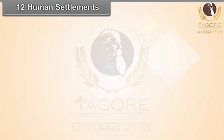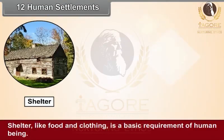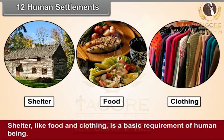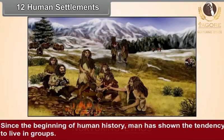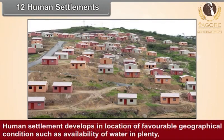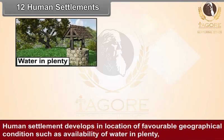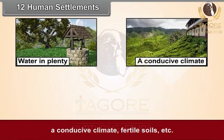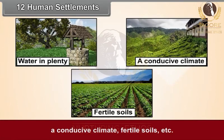Chapter 12: Human Settlements. Shelter, like food and clothing, is a basic requirement of human beings. Since the beginning of human history, man has shown the tendency to live in groups. Human settlements develop in locations of favorable geographical conditions, such as availability of water in plenty, a conducive climate, fertile soils, etc.